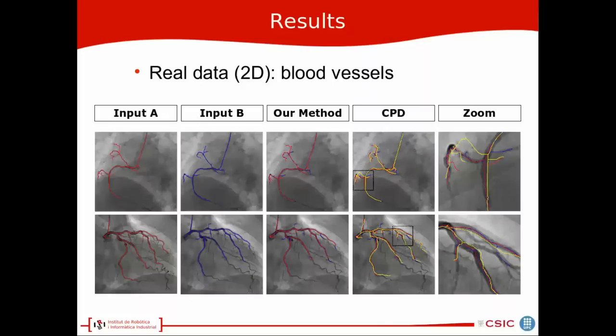We also present results on angiography of a heart, where the two images are taken at different times from a heart cycle. And again, our method can find the solution in spite of the high deformations, and CPD cannot find the solution because of the outliers again.